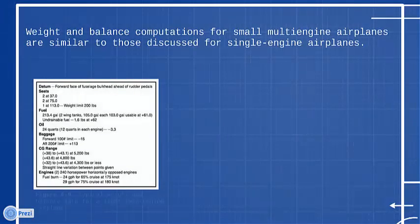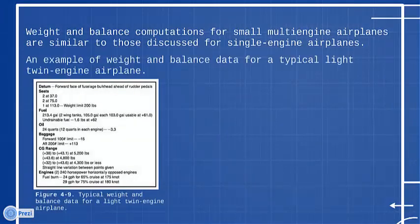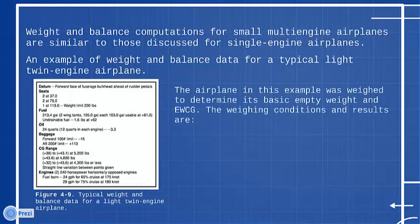Figure 4-9 shows an example of weight and balance data for a typical light twin-engine airplane. The airplane in this example was weighed to determine its basic empty weight and EWCG.